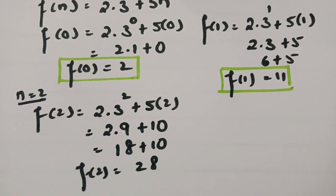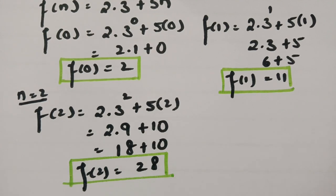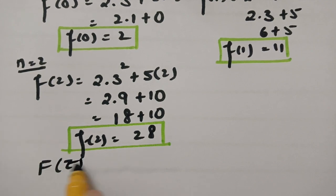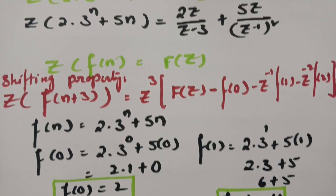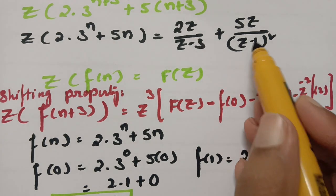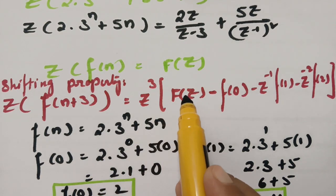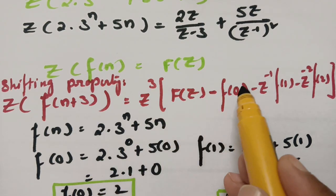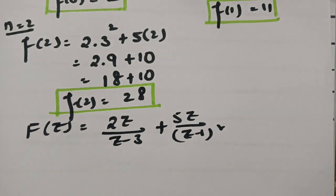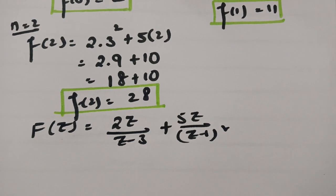So we have all values ready: f(0) = 2, f(1) = 11, f(2) = 28, and capital F(z) = 2z/(z−3) + 5z/(z−1)^2. Now we substitute into the shifting property formula.